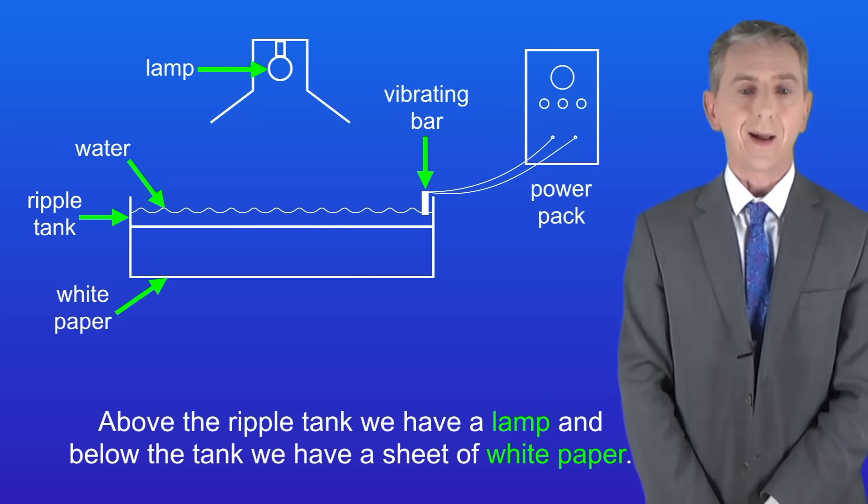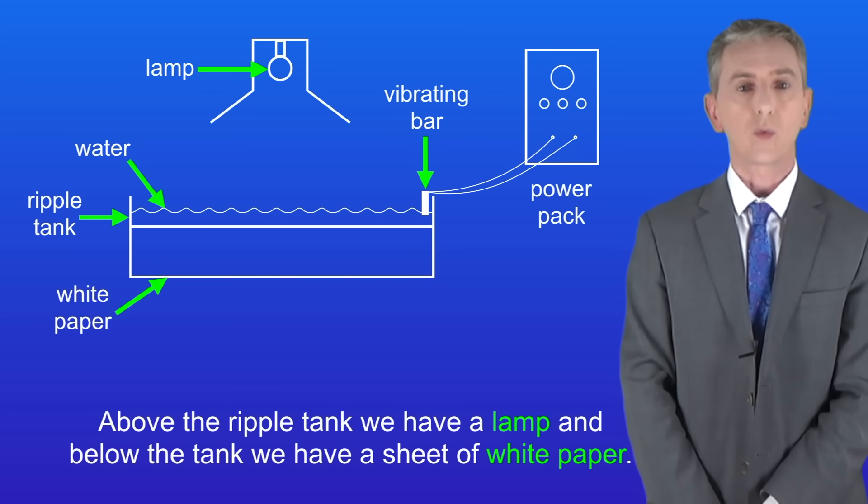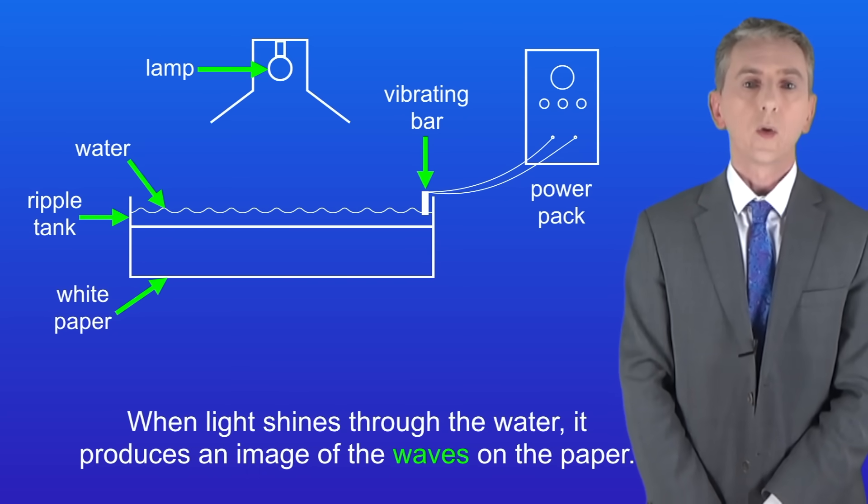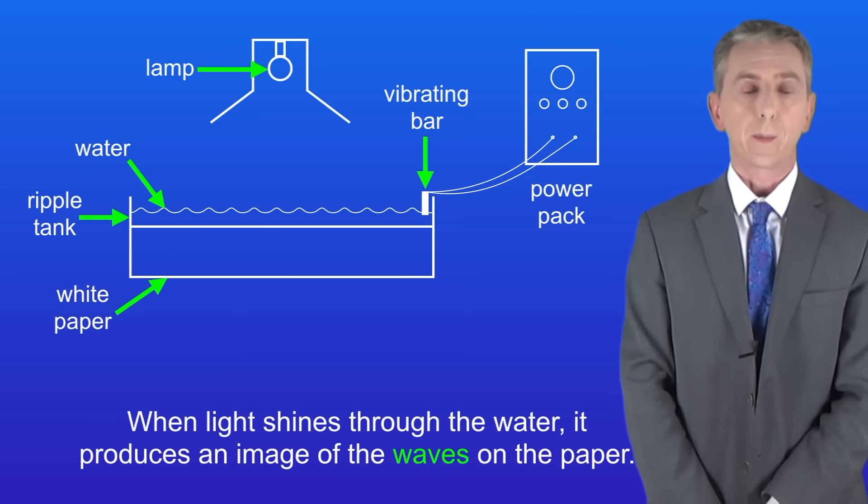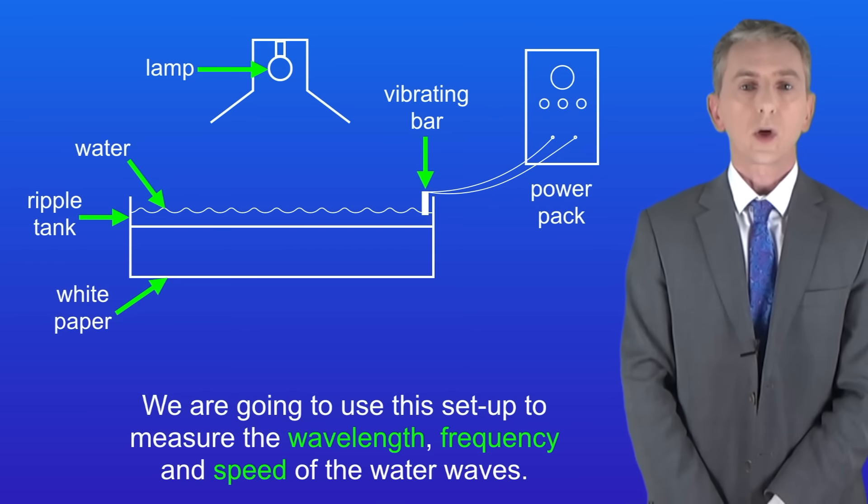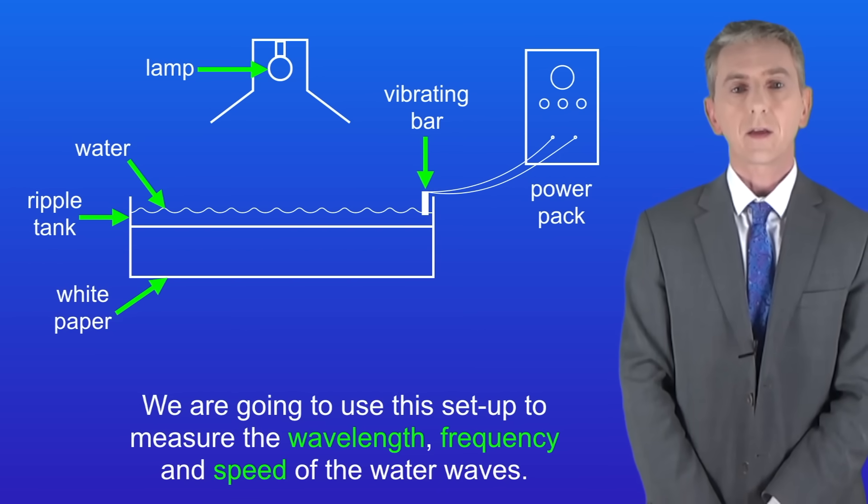Above the ripple tank we've got a lamp and below the tank we've got a sheet of white paper. When light shines through the water it produces an image of the waves on the paper. We're going to use this setup to measure the wavelength, frequency, and speed of the water waves.